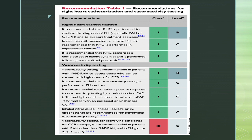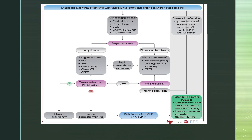Two tables from the guidelines are presented: one with recommendations for right heart catheterization and vasoreactivity testing with their level of evidence, and how to choose which test to perform for which patient. A diagnostic algorithm is also shown for unexplained dyspnea — after ruling out history findings, performing ECGs, and checking saturations, if a lung cause is suspected the relevant tests are done. If no cause is found and primary hypertension is suspected, invasive assessment is performed if needed.